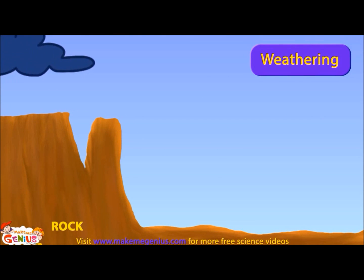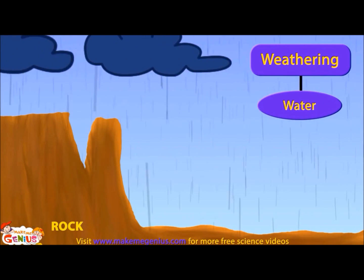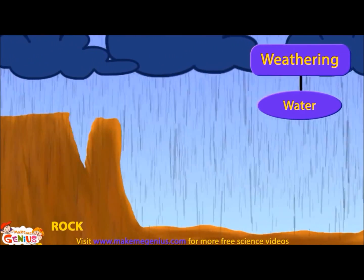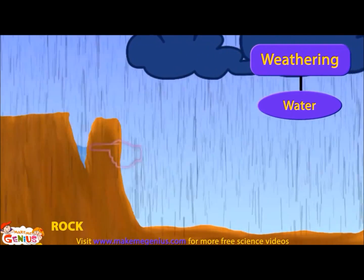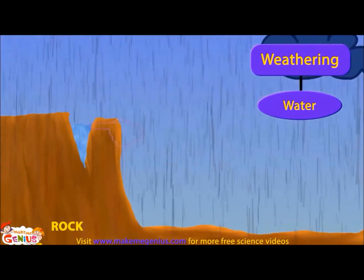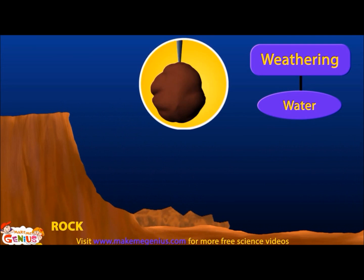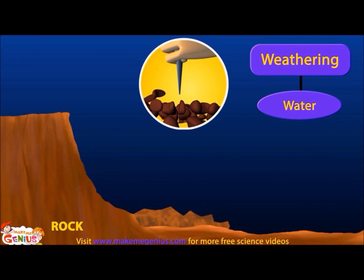Weathering can be caused by many factors. For example, water breaks down rocks and soil in two different ways. One way is when it rains — water seeps through rocks from small cavities. In the night, when the temperature becomes lower, the water freezes. This frozen water needs more space, so it puts pressure on the surrounding rock, which then breaks down. It's like putting a nail in the rock, and then the rock breaks down when it tries to make space for the nail.